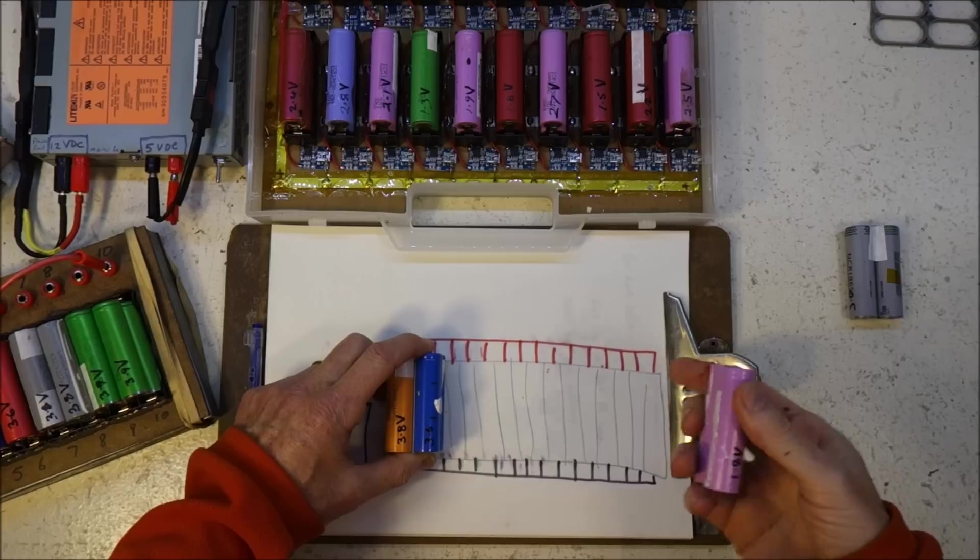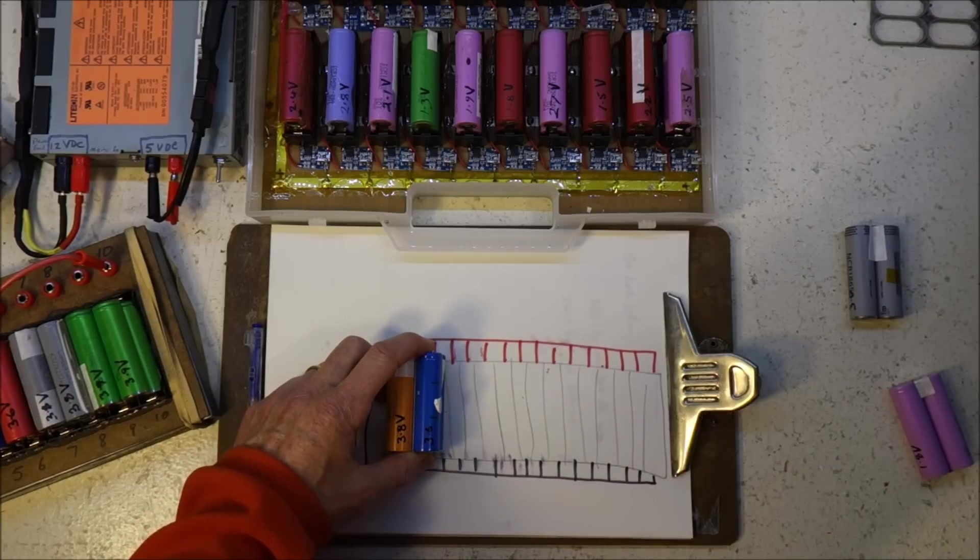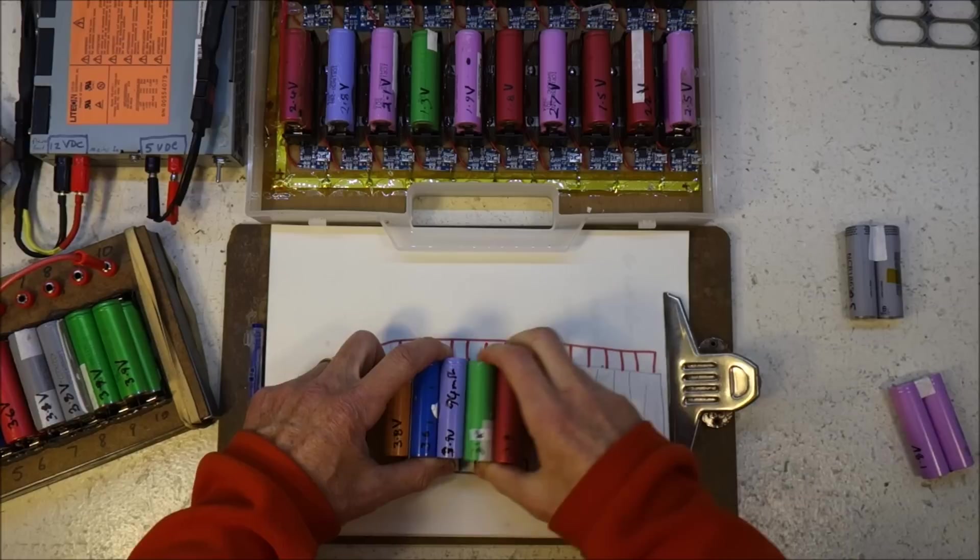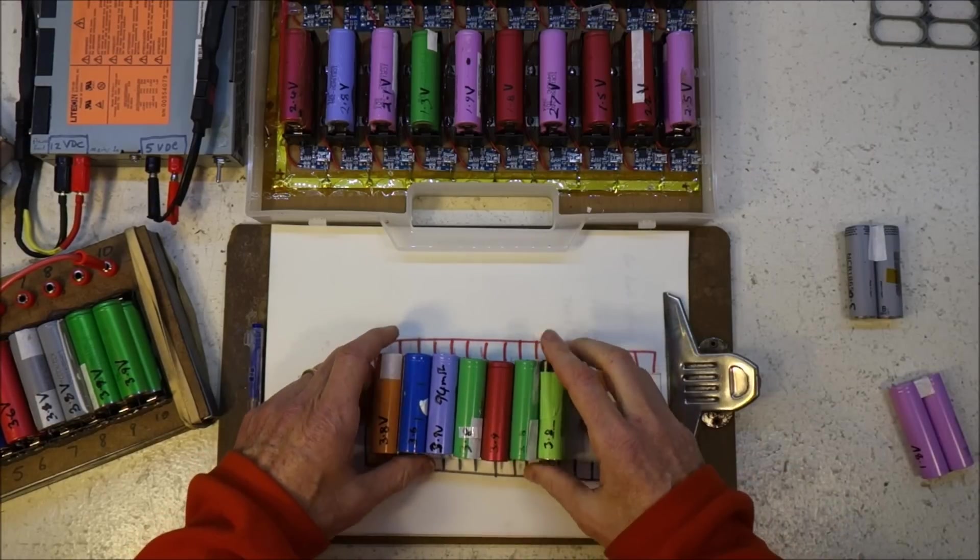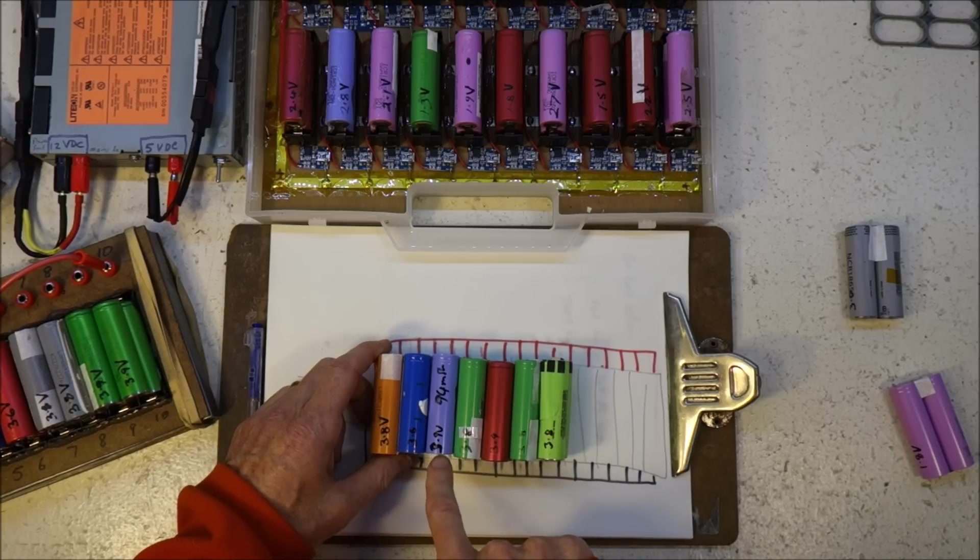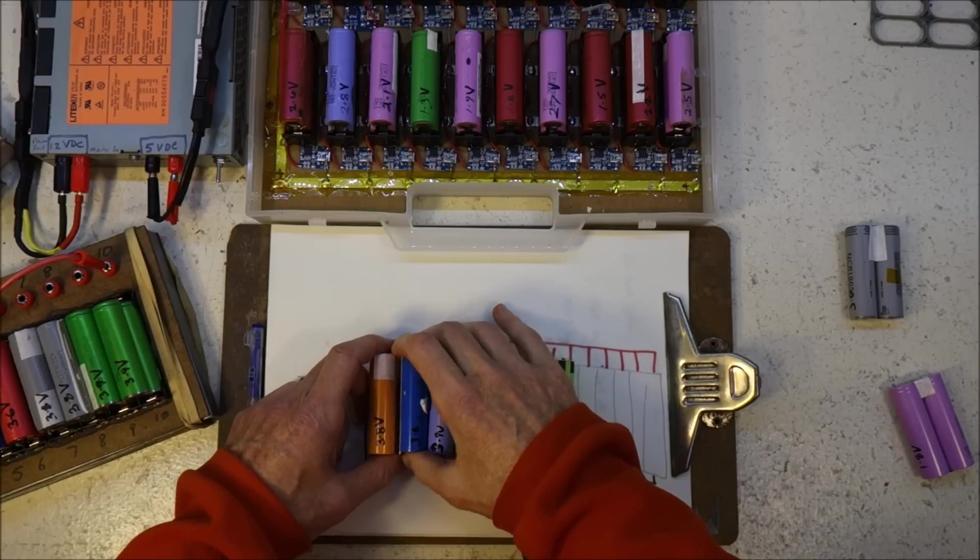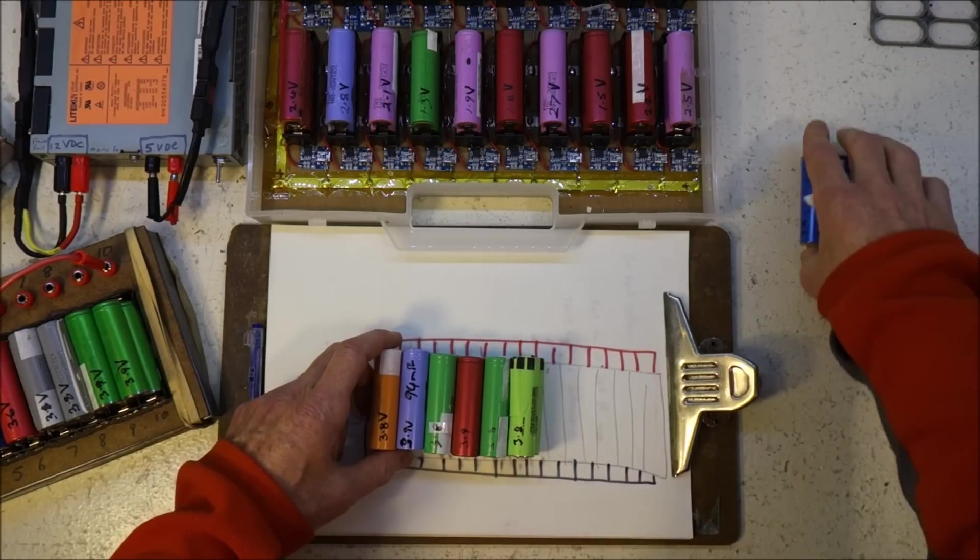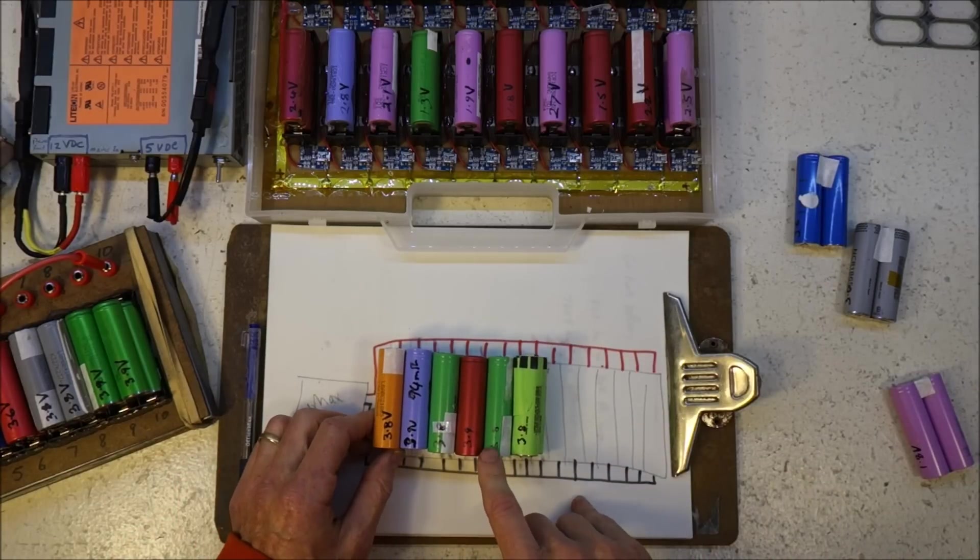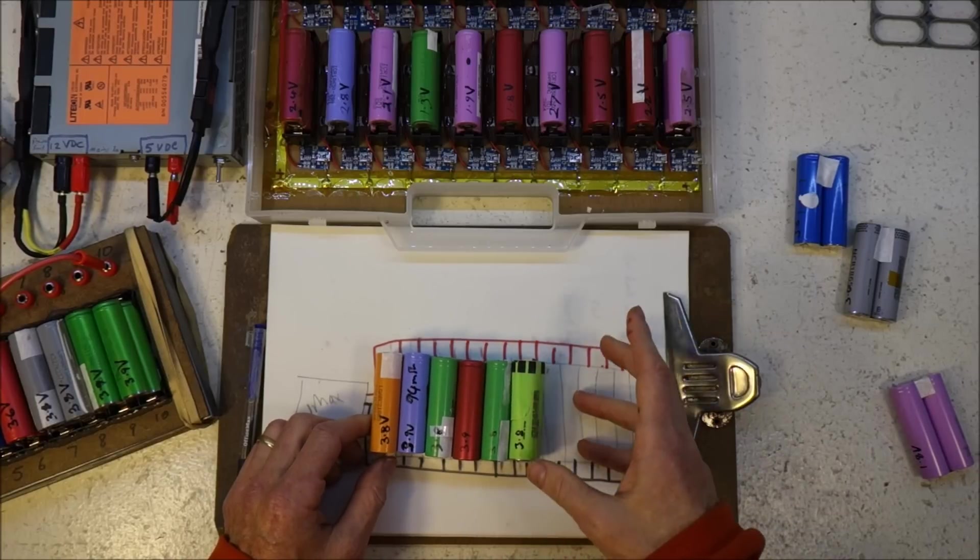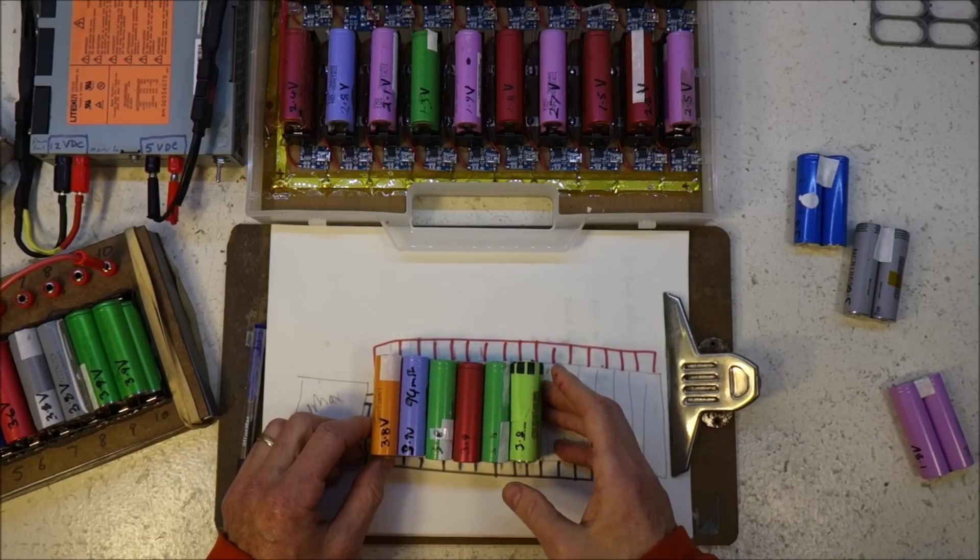So if you have a whole lot of 3 point something volt cells - here's 3.8, 3.6, 3.9, 3.8, 3.9, 3.8, 3.9. So if I took away the 3.6, I've got a spread of 0.1 volts, and those will equalize really quickly, and they'll be fine.